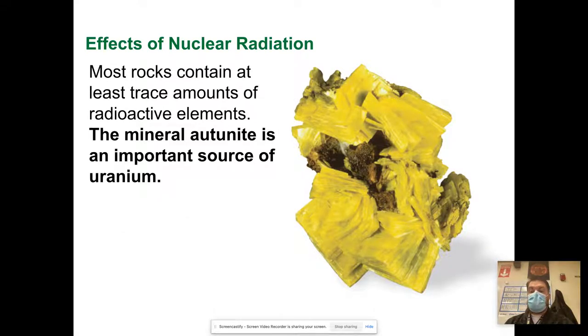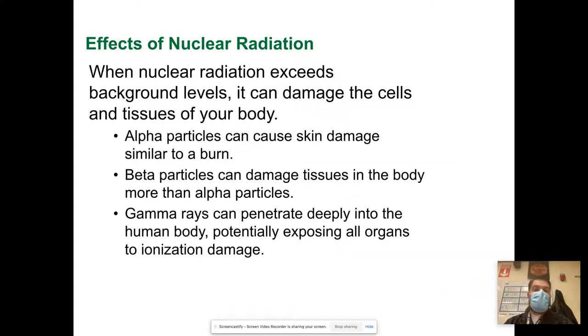Effects of nuclear radiation. Most rocks contain small trace amounts of radioactive elements. This particular mineral is an important source of uranium. When nuclear radiation exceeds background levels, it can damage the cells and tissues of your body. Alpha particles can cause skin damage similar to being burned. Beta particles can damage tissues in the body more than alpha particles. Gamma rays can penetrate deeply into the body, exposing all organs.